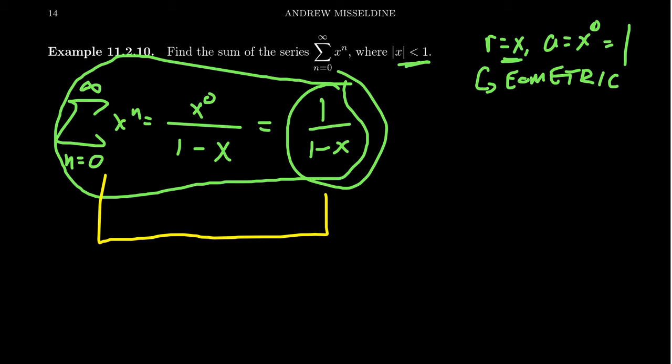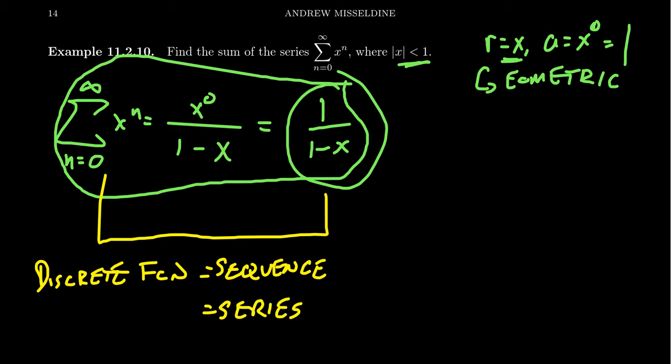Because as we've talked about, sequences are examples of discrete functions. A discrete function, that's what we mean by a sequence compared to continuous functions we saw in the past. A series is actually an example of what we might call a discrete integral.